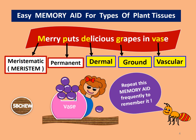This mnemonic to remember the different types of plant tissues was given in the last lesson: "Mary puts delicious grapes in the vase," which stands for the meristematic tissue, permanent tissue, dermal tissue, ground tissue, and vascular tissue. Here is a tip to help you remember it: write out this phrase together with the name of the tissues on a piece of paper and paste it on a wall somewhere in your house. As you constantly view it every day, it will strengthen the memory of this phrase and the names of the tissues.